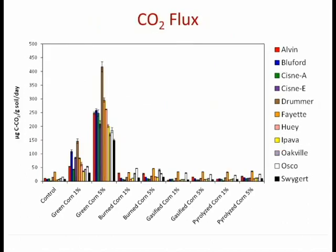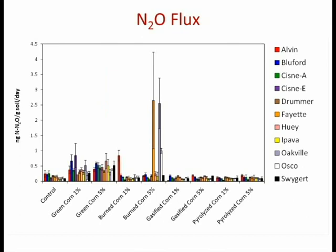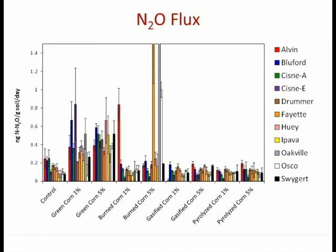The similar result holds for N2O flux. There are a couple of outlier points with the burned corn stover, but the consistent effect we're seeing is with the green corn stover at 1% and 5% — higher than the control and higher than all of the biochars. Again, it's the unmodified material causing this effect. The data for methane flux is a little less clear — we see a little bit of a response with 1% corn stover, but not much with the rest.